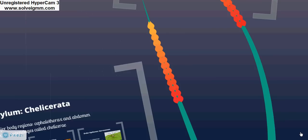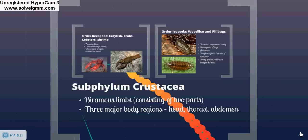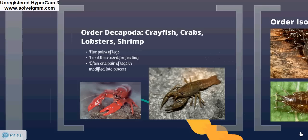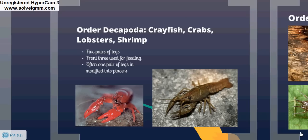Our next subphylum is Crustacea, defined by biramous appendages — legs with two parts — and three major body regions: the head, thorax, and abdomen. When people think of crustaceans, they typically picture the order Decapoda. These aquatic organisms include crabs, shrimp, lobsters, and even our common freshwater crayfish, pictured here. Decapods have five pairs of legs, the front three used for feeding, and often one pair of legs modified into pinchers.